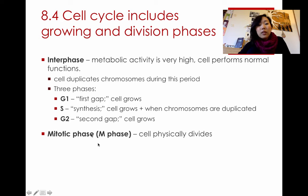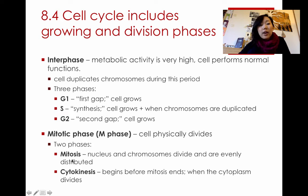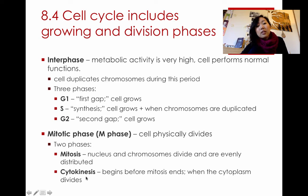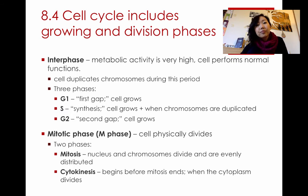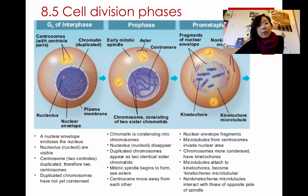After interphase, the cell enters the M phase, or mitotic phase, which includes two parts. Mitosis is the division of the nucleus and chromosomes — essentially the division of the DNA and genetic material. Cytokinesis is the actual division of the cytoplasm and the entire cell. You are responsible for knowing the different phases of cell division, so making flashcards is recommended.